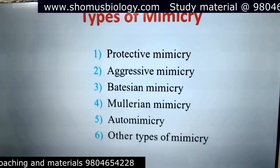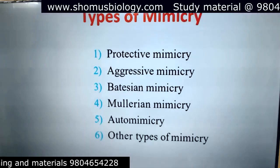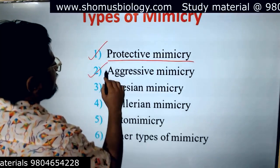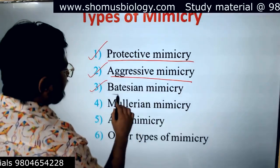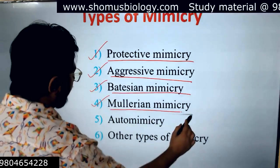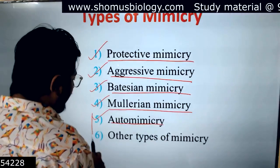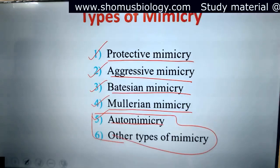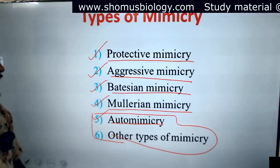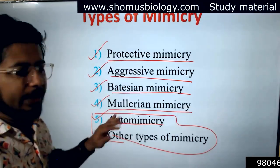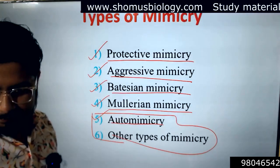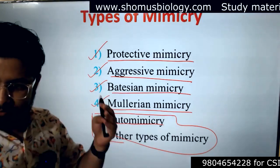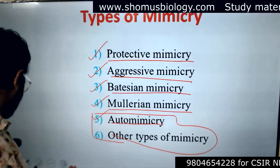There are five main types of mimicry: protective mimicry, aggressive mimicry, Batesian mimicry, Mullerian mimicry, and automimicry. Mainly the four prominent types are protective mimicry, aggressive mimicry, Batesian mimicry, and Mullerian mimicry. For examples, seeing pictures makes it easy to remember — there are things you need to remember and write in exams from this topic.